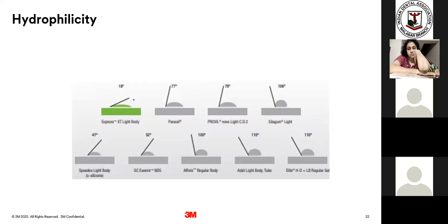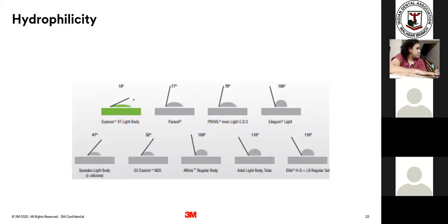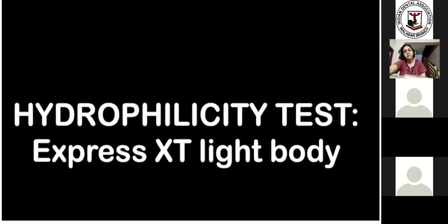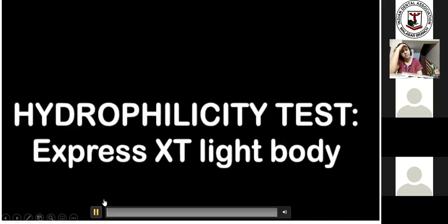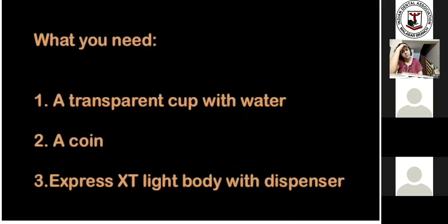The 3M material is my personal favorite. I've been using it from my post-graduation days — my guide introduced me to this material. Before that, I used several different light body and putty materials, and it used to be a nightmare, especially putting the light body onto the putty. I had to use the pressure of both my hands sometimes to extrude the material. Whereas this material was quite easy — it would just flow out as soon as I pressed the gun. Also, it gives you about 18 degrees of hydrophilicity or contact angle, which makes it very hydrophilic as compared to all other competition materials available.